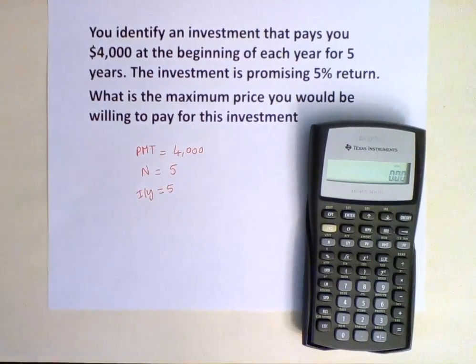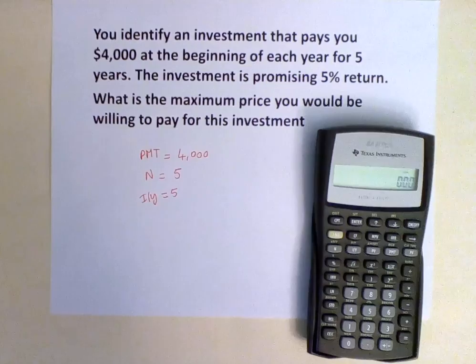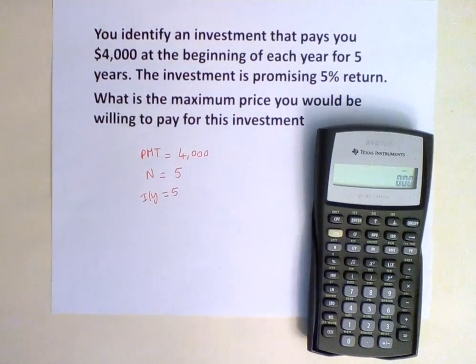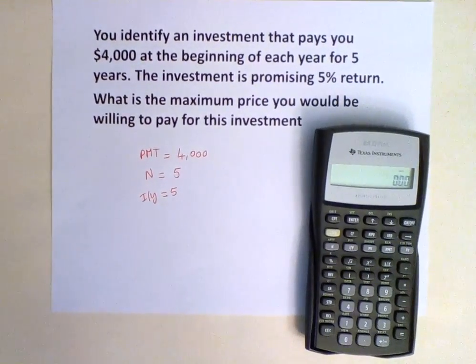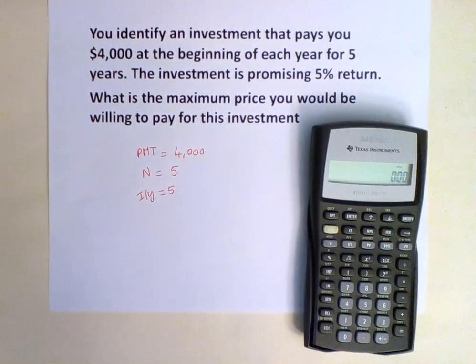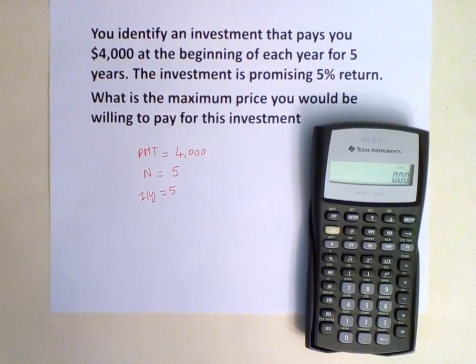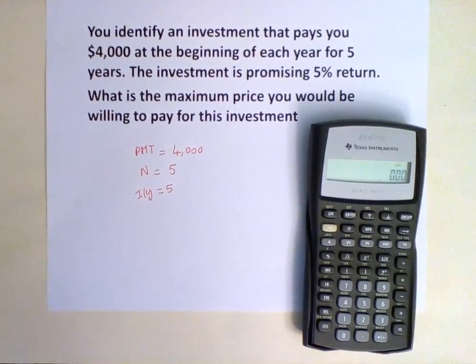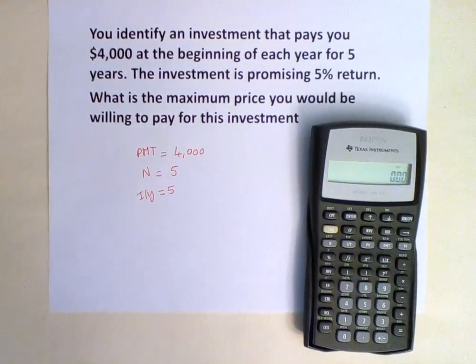You can see that we have BGN on top of the numbers. This means that the calculator is set to begin mode. We're looking for the maximum price we'd be willing to pay for this investment, so we need to solve for the present value.